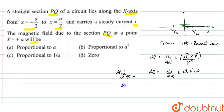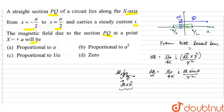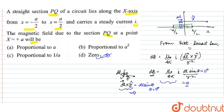The angle theta is between the DL vector and the R-cap direction. In this figure, the DL element is along the x-direction, and the R vector also points in the same direction — the R-cap direction. So the angle theta between DL and R-cap is equal to zero degrees. Therefore, DL sin(theta) equals zero, making the magnitude of the magnetic field equal to zero. So option D is correct.